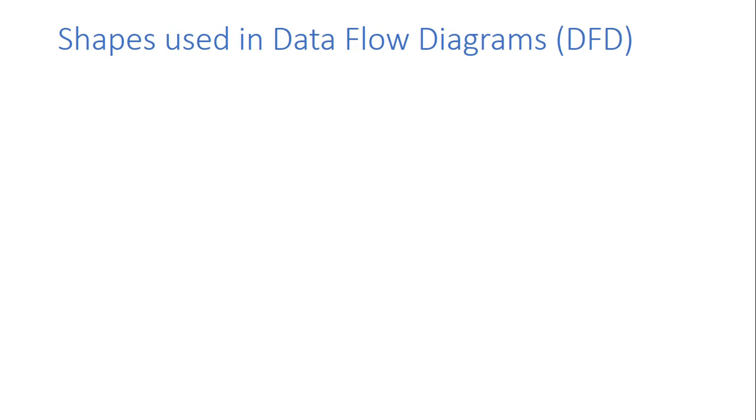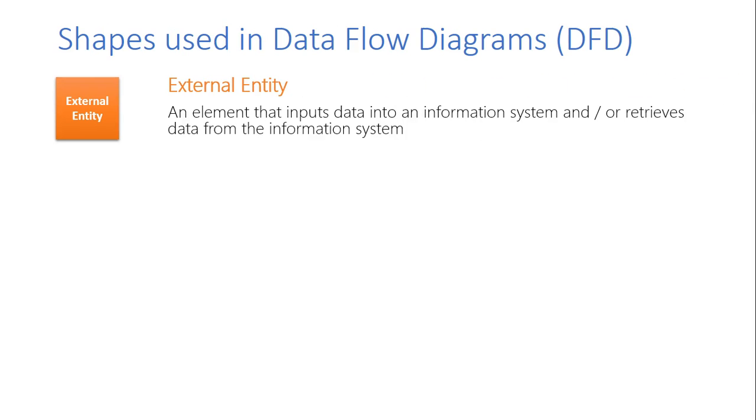So next we'll take a look at the actual symbols used in a data flow diagram. So once again we have our external entity, and here external entity means the exact same thing. It is once again some sort of entity inputting into the system or receiving information from the system.